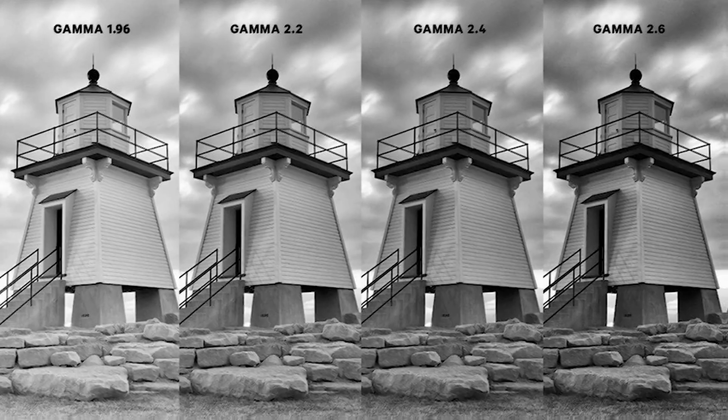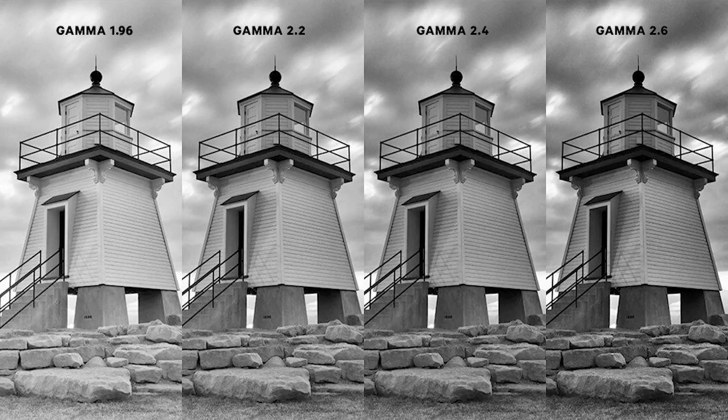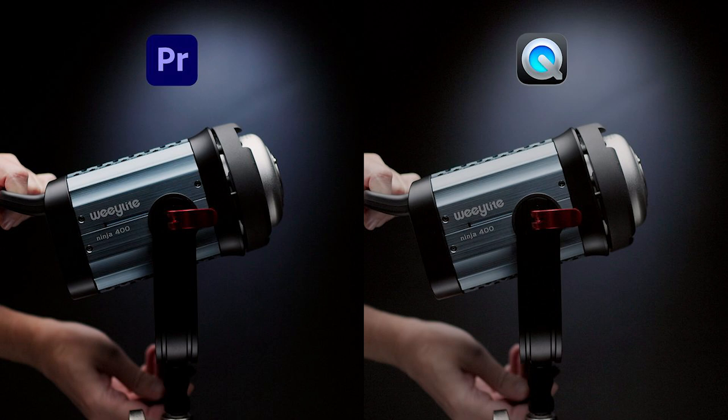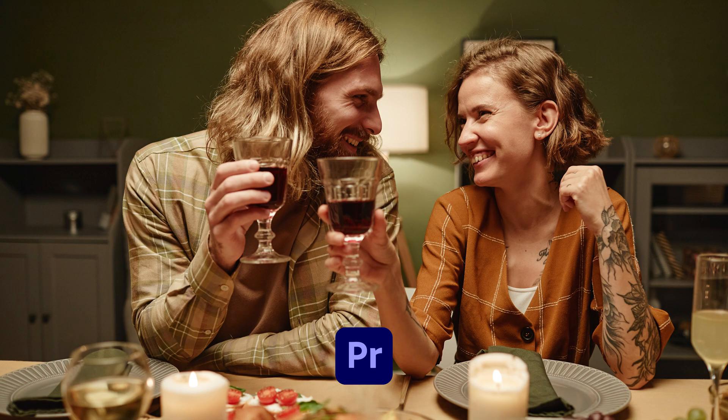The issue boils down to a difference in gamma standards. QuickTime uses 1.96 gamma, which is brighter, while Premiere Pro traditionally uses 2.4 gamma, which matches broadcast TV standards. This mismatch makes your video appear brighter and less saturated in QuickTime even though it looked completely different in Adobe Premiere Pro while you were editing. Gamma mainly affects the mid-range brightness of an image — a file edited at 2.4 gamma may look perfect for TV but lighter and less saturated in QuickTime Player.